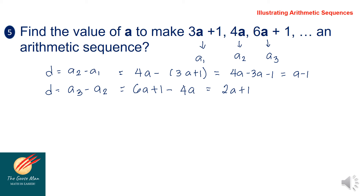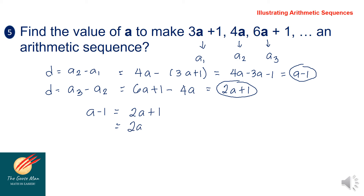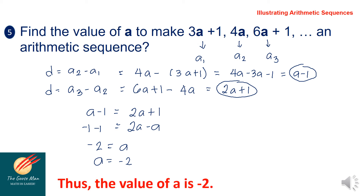Using the transitive property of equality, a minus 1 equals 2a plus 1. Solving for a: moving a to the other side gives negative 1 minus 1 equals a, so negative 2 equals a. Therefore, the value of a is negative 2.